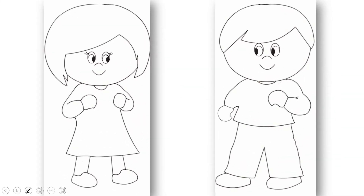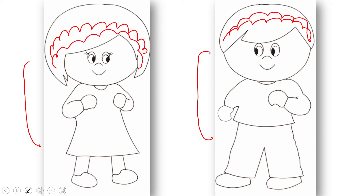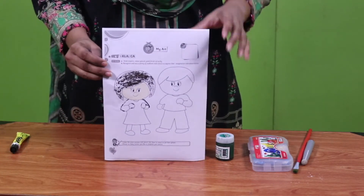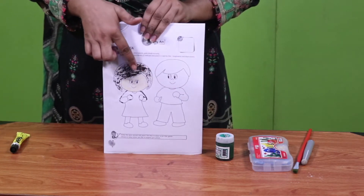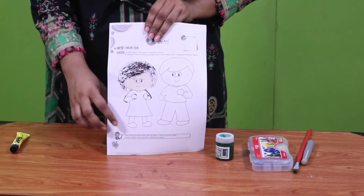ہمارے پاس ایک girl اور ایک boy کی picture ہے۔ آپ اپنے بالوں کو thread سے بنا سکتے ہیں — dark brown یا black thread چپکا سکتے ہیں۔ لیکن میں نے چائے کی پتی سے اس girl کے بال بنائے ہیں — نیچے glue لگا کر اس کے اوپر tea paste کر دی ہے۔ اس سے بال بہت اچھے لگ رہے ہیں، اور میں نے crayon سے face بھی color کیا ہے۔